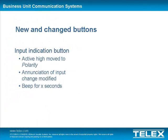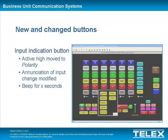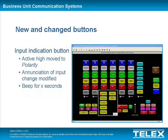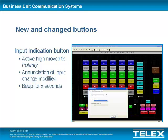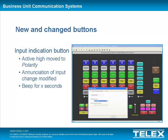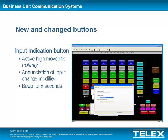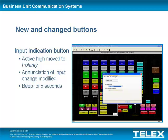Several changes were made to the Input Indication Setup button. The Active High field was moved into its own group box, called Polarity. The Annunciation of Input Change group box was also modified. The existing radio button options of No Beep and Beep for X Seconds were replaced with a check box. If the Beep for X Seconds check box is checked, the console will beep for the entered time duration upon a relay change.